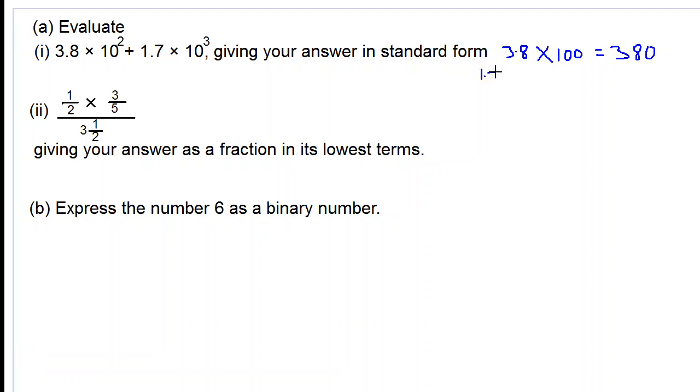1.7 times 10³ is 1.7 times 1,000. Moving the decimal point three places to the right, we have 1,700.